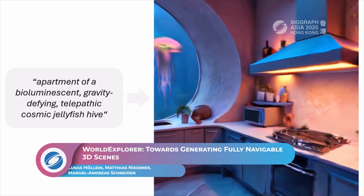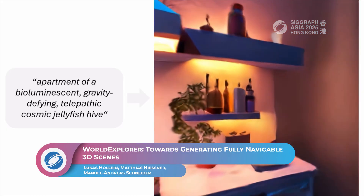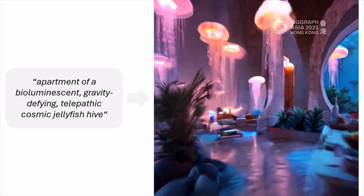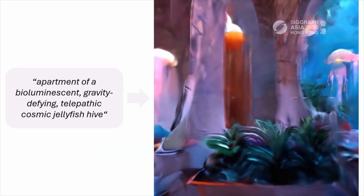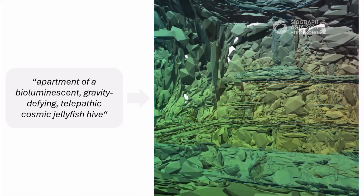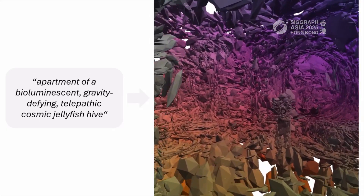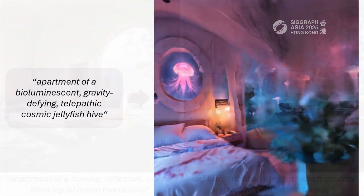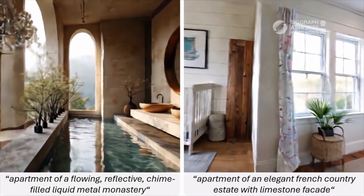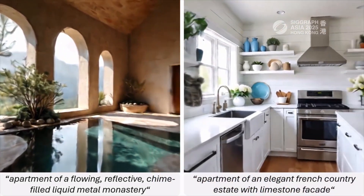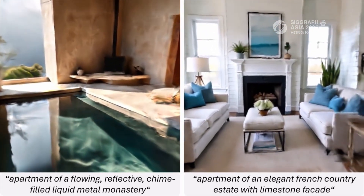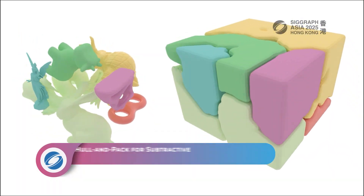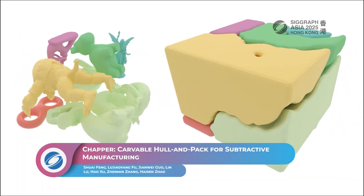Interactive exploration of an AI-generated 3D scene can be spoiled with artefacts for all but a limited set of views. World Explorer provides views corresponding to a 360 degree panorama, stored and expanded on the fly using video diffusion models in an iterative scene generation pipeline. Collisions are avoided by using the most relevant views from the scene memory based on priors, enabling the user to explore the scene at high quality.